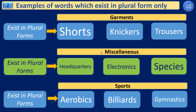In the next subcategory, we have the words headquarters, electronics, and species. We don't say headquarter, electronic, or specie, because these words always come in plural forms. In the sports items subcategory, we have aerobics, billiards, and gymnastics. We don't call them aerobic, billiard, or gymnastic. From these examples, it is again clear that there are some words which always exist in plural forms.